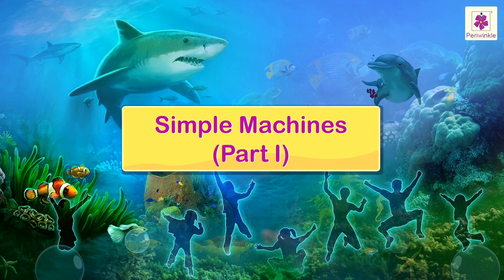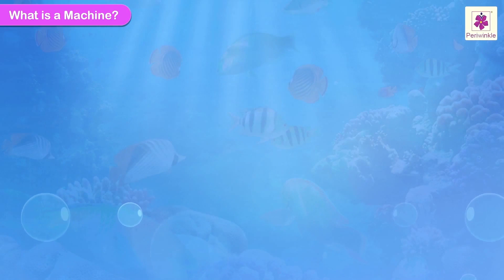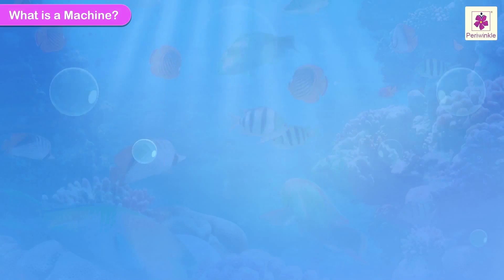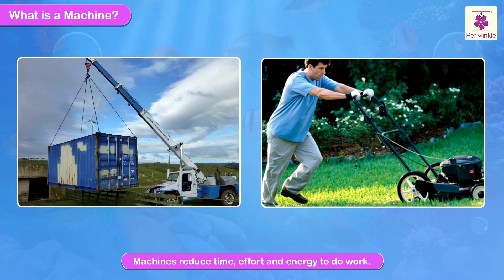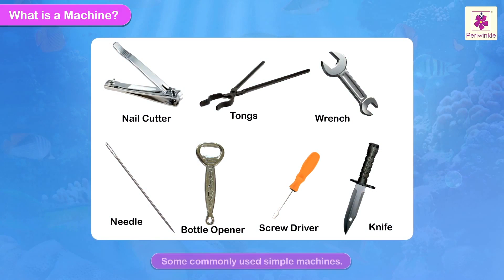Simple machines. What is a machine? A machine is a device that makes work simpler, easier, and faster. Machines reduce time, effort, and energy to do work. Simple machines are those that have a simple structure and work on a simple and basic principle. Look at some commonly used simple machines.